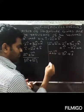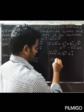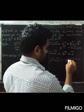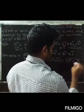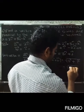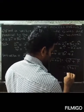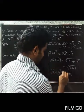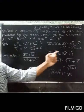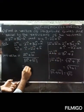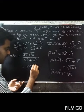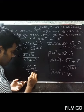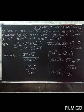Next, modulus of (a vector + b vector) equals the square root of (3² + 1²) equals square root of (9 + 1) equals √10. So the unit vector equals (3î + ĵ) divided by √10.